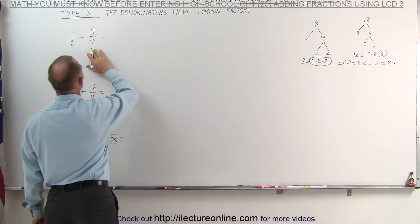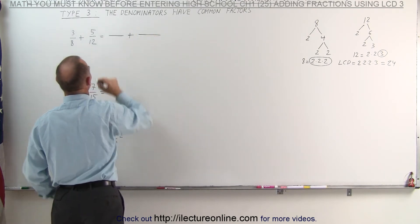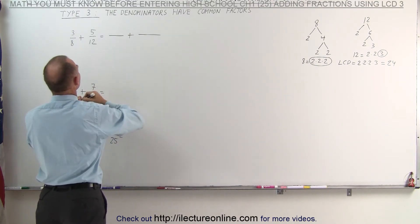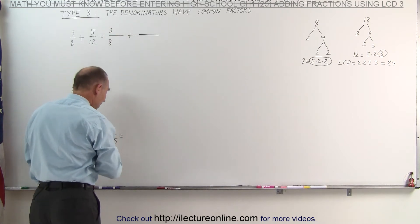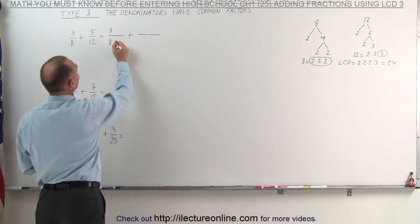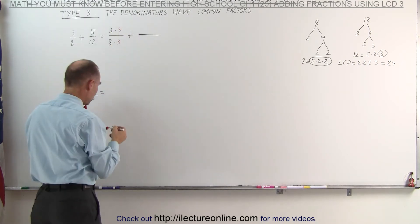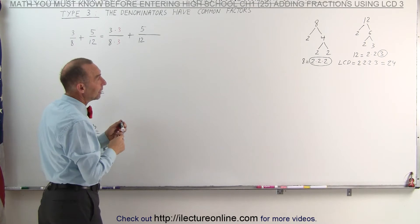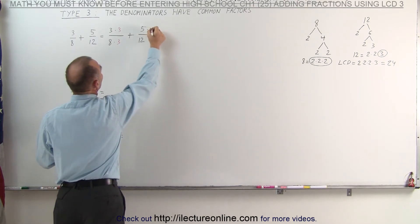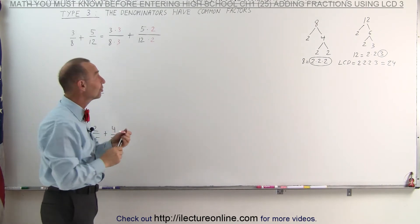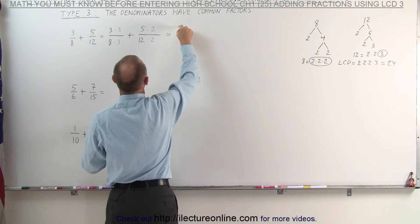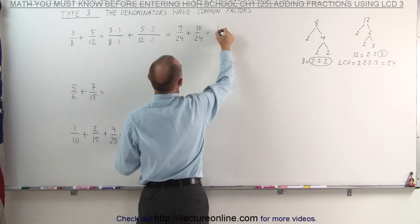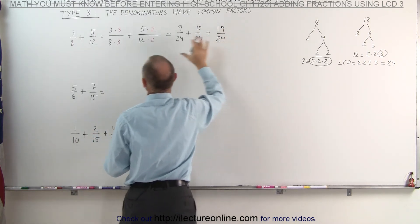That means we have to change these fractions so that the denominators become 24. I know that if I multiply 8 times 3 I get 24, so we start with the first fraction, 3 eighths, and to make the denominator equal to 24, I must multiply it times 3, which of course I must also do with the numerator. On the second fraction, I can turn the denominator into 24 by multiplying it times 2, and of course I must do the same to the numerator. Now I have two fractions with the same denominator. The first fraction becomes 9 over 24, the second fraction becomes 10 over 24. When I add them together, I get 19 over 24, which is the sum of these two fractions.